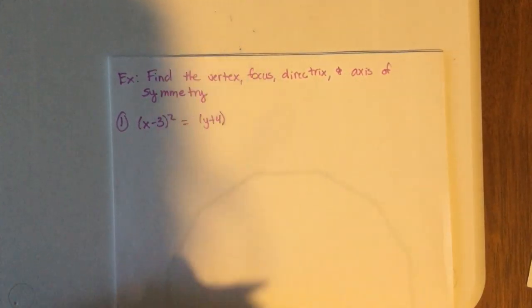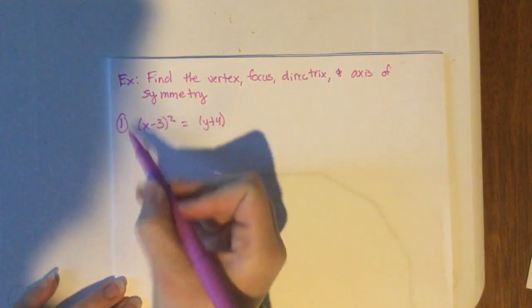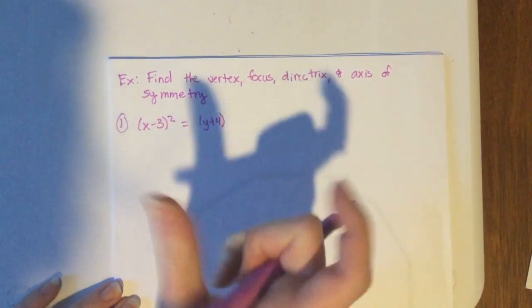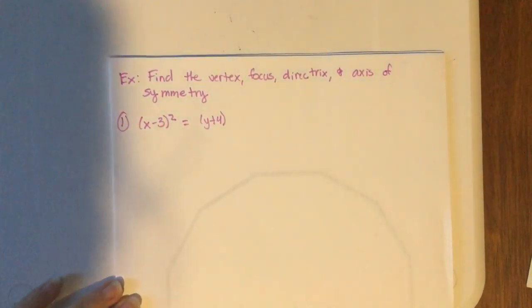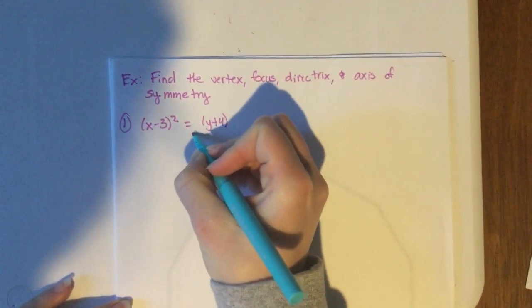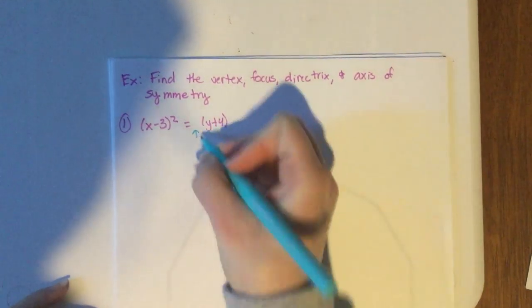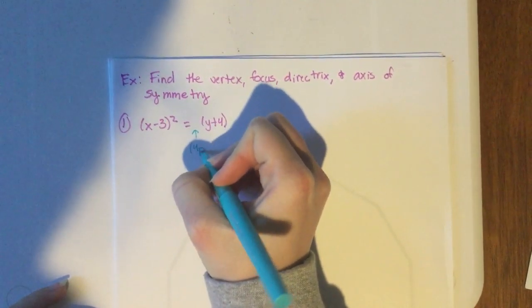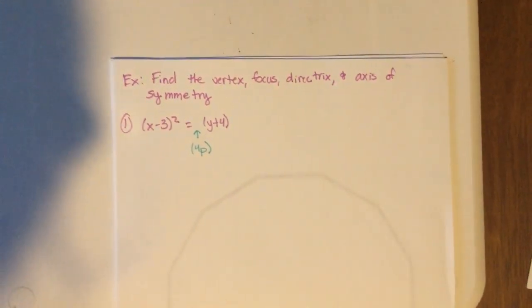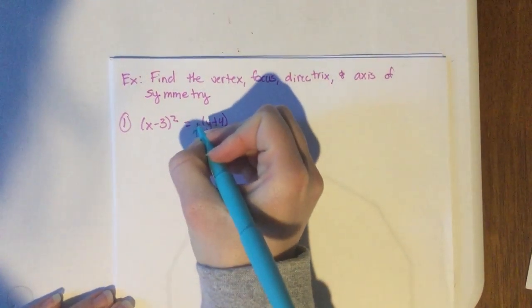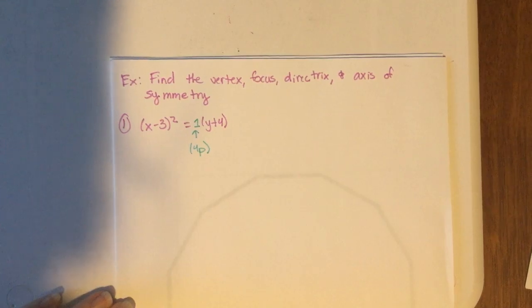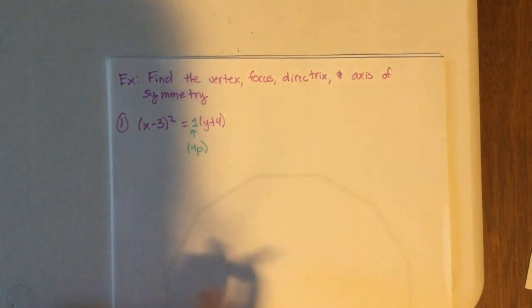Hopefully you said up — that is the correct answer. The reason I know it's up is because the x term is squared. X squared gives us the parabolas we've always learned about, which go up and down. The reason I know it's positive is that nothing is in front of the y — that space always holds 4p — and here it's an implicit positive one.